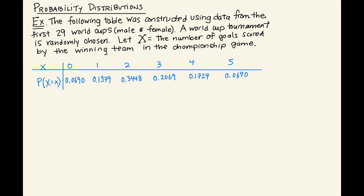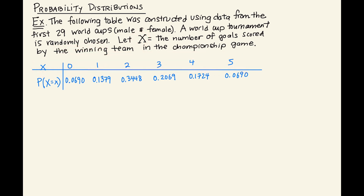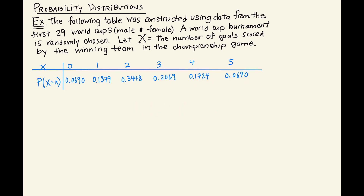We want to answer some basic questions using the probability distribution. X is our random variable, which can take the value zero, one, two, three, four, or five, and its value is determined by chance. Two conditions for probability distributions are met: each of these numbers is between zero and one, and if you add up these six numbers, the total is one — there might be some rounding, but the sum is one.